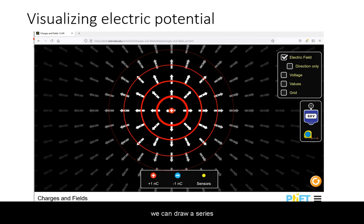You can draw a series of circles, each representing a line where the potential is the same. These are known as equipotential surfaces.